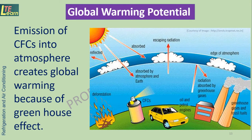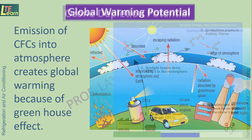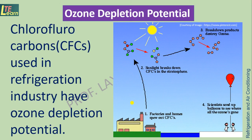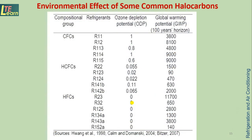Emission of chlorofluorocarbons into the atmosphere creates global warming because of the greenhouse effect — this is known as global warming potential. Chlorofluorocarbons used in the refrigeration industry have ozone depletion potential. Here are some values of ODP and GWP for different refrigerants.